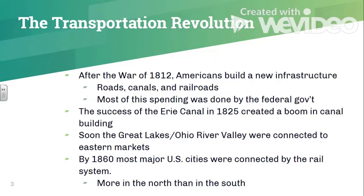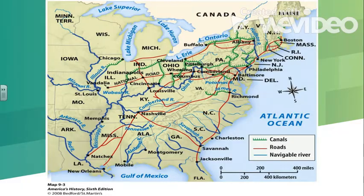There is a lot more transportation infrastructure in the north than the south. Here's a map showing the railroad networks, canals, and navigable rivers — we actually have more navigable rivers in the south, which is one of the reasons we don't see as much railroad development there. Keep this map in mind as we move forward.